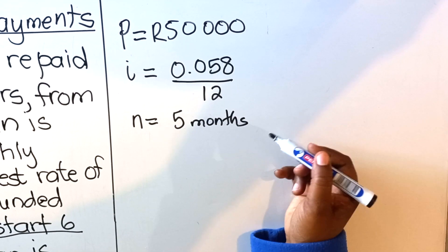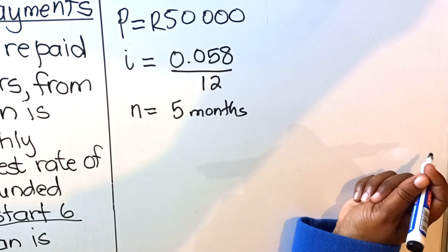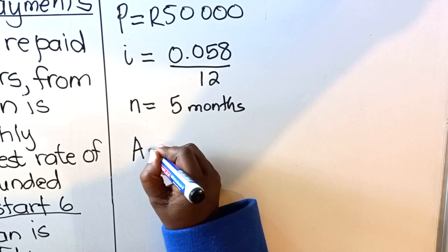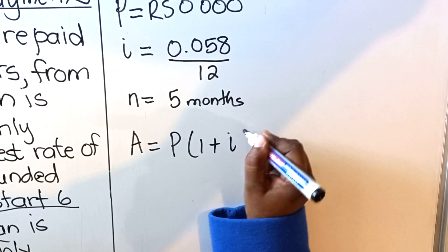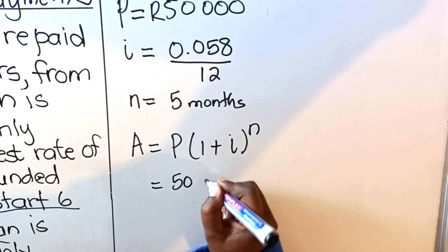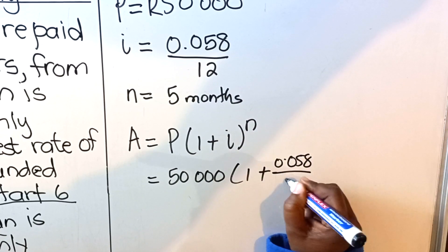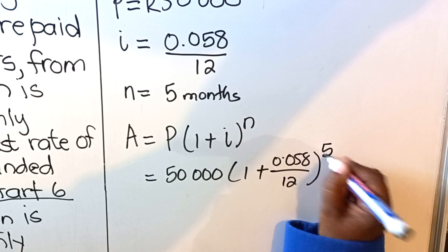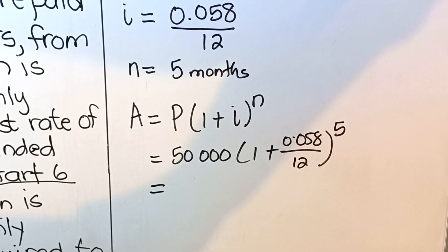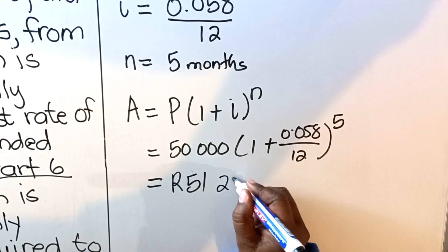In Grade 11 we take the number of years and multiply by 12 to convert to months, but in this question n is already in months — it's 5. Use the compound interest formula from your formula sheet. So it's going to be: 50,000 × (1 + 0.058/12)^5.